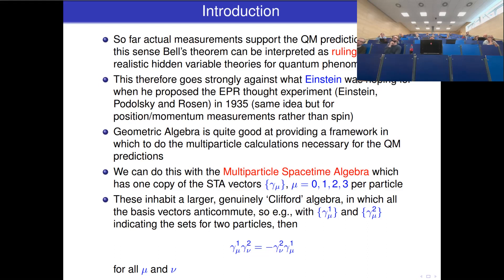Now, geometric algebra is quite good at providing a framework to do the multiparticle calculations necessary for quantum mechanical predictions. We can do this with the multiparticle spacetime algebra, which has one copy of the STA vectors, the gamma-mu, per particle. These inhabit a larger, genuinely Clifford algebra, in which all the basis vectors anti-commute. So the gamma-mu for two different particles will anti-commute, while the four for each particle commute together.